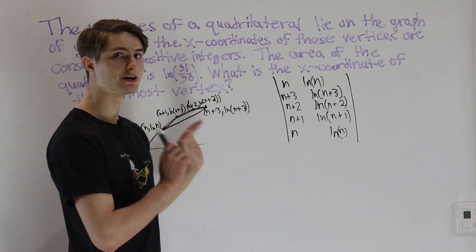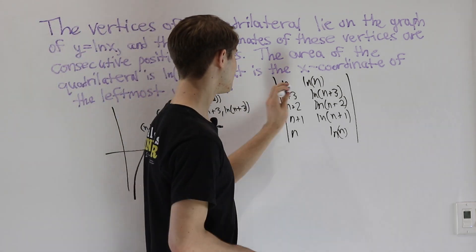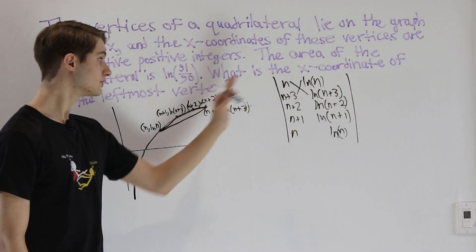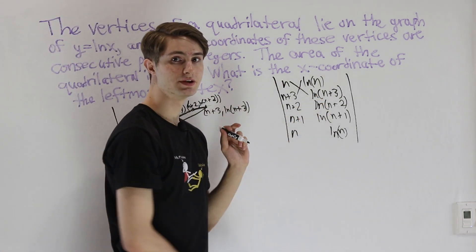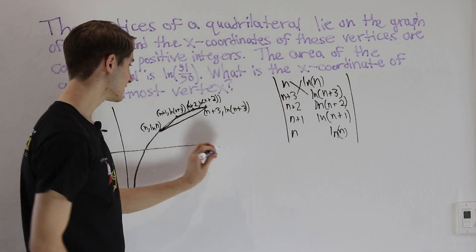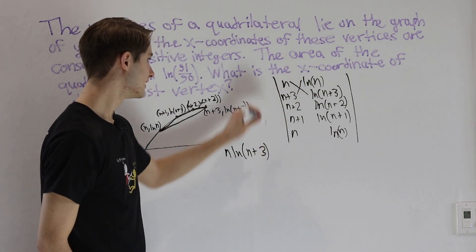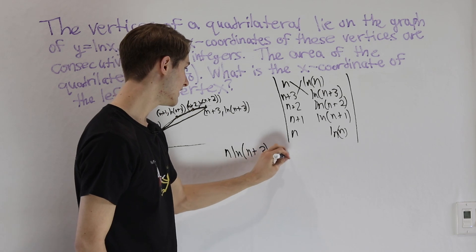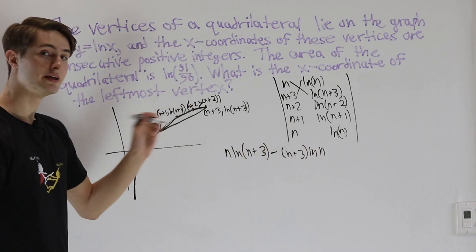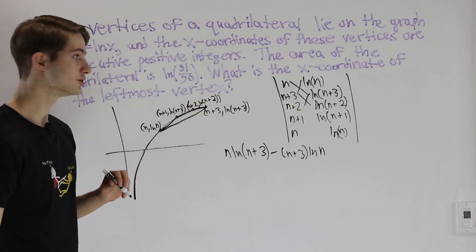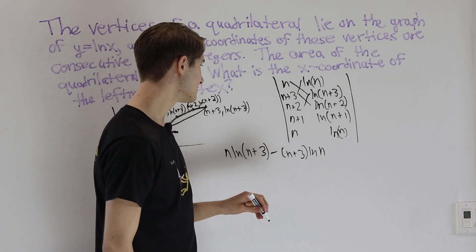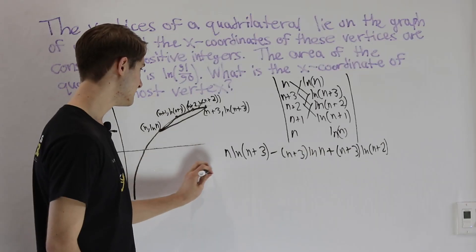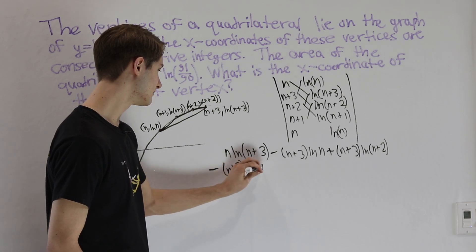Now we're going to start making some shoelaces. The first one at the top involves a cross between the first four entries along two diagonals. We multiply the numbers at the ends of each diagonal: first, n times ln(n+3) — that's the diagonal going down — and then subtract n+3 times ln(n). The next shoelace gives us plus (n+3)·ln(n+2) minus (n+2)·ln(n+3).